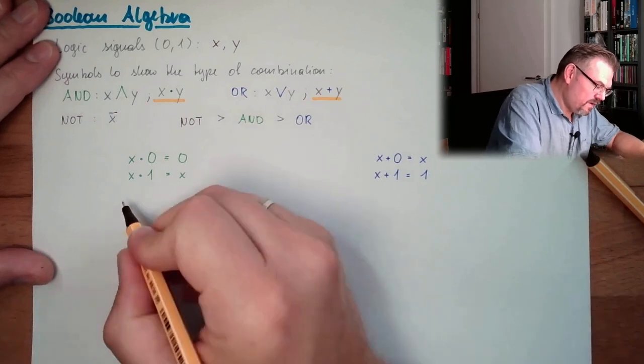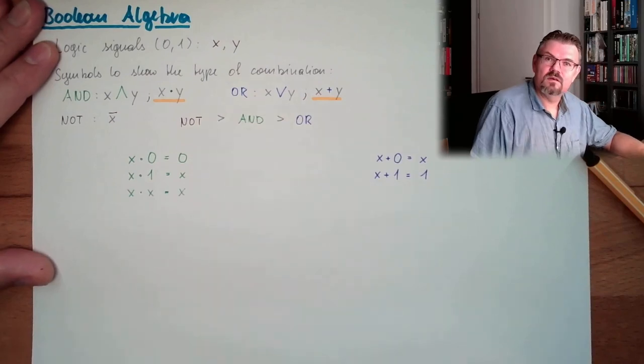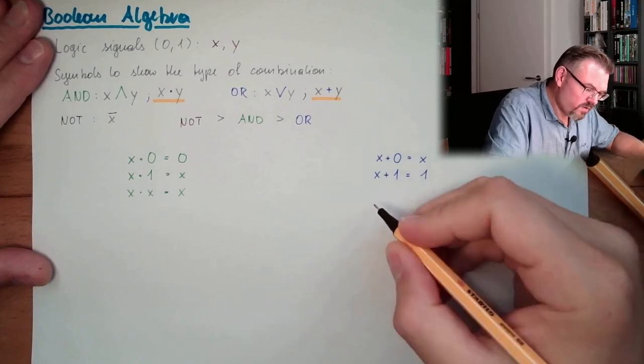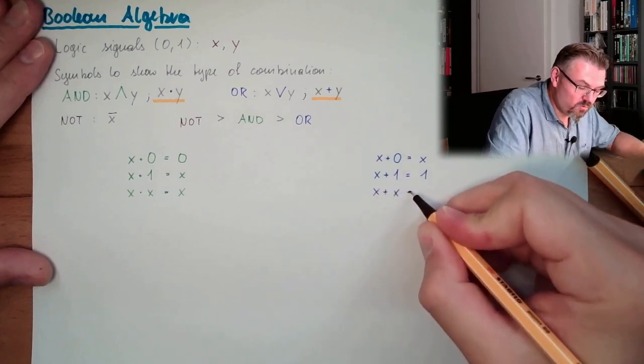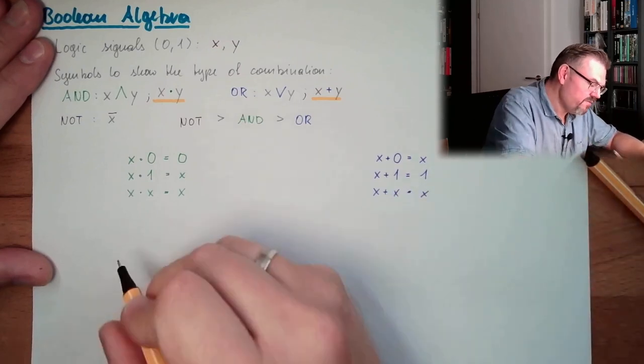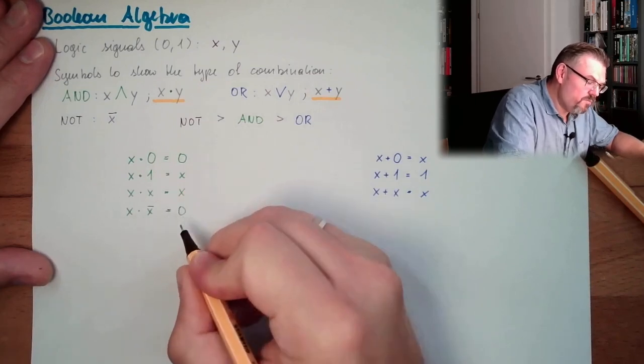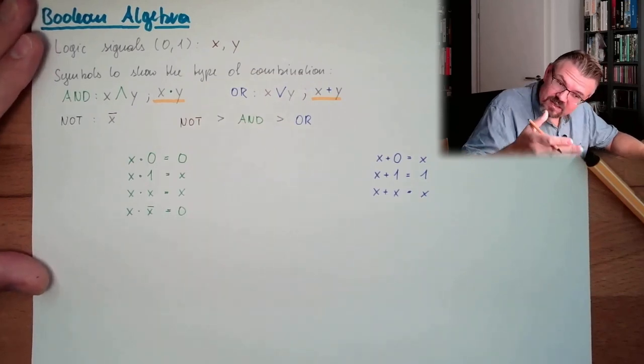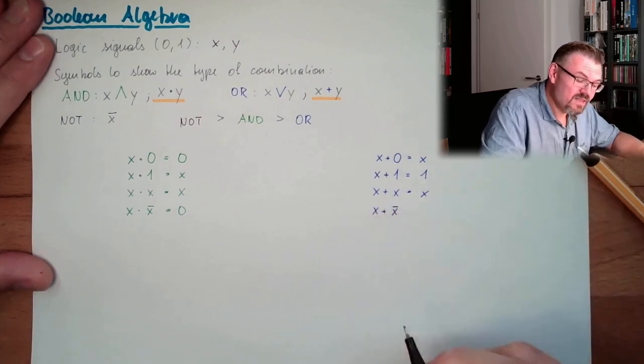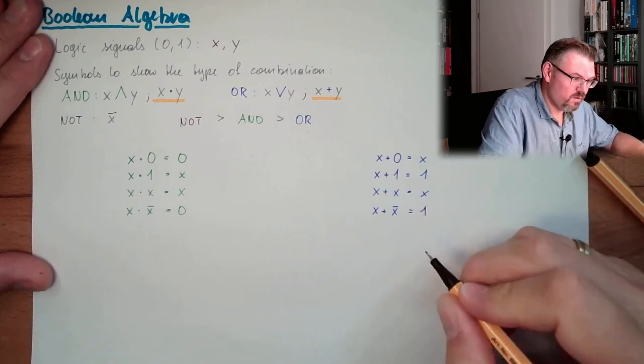And here, we have x and x. This is not x squared. This is x. The signal and the signal is always the same signal. This is also true for here. The signal OR the signal is always the signal itself. Then we have x and NOT x. This is always 0, because either of them must be 0, because it's exactly the opposite. However, here, x OR NOT x. This is always 1, because one of them is always 1.